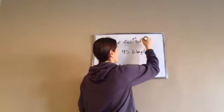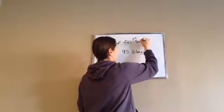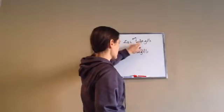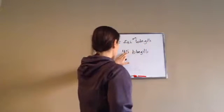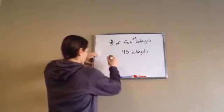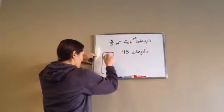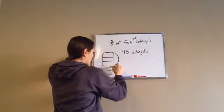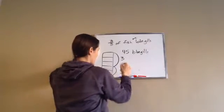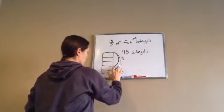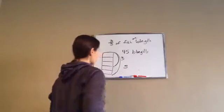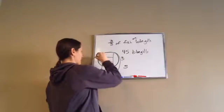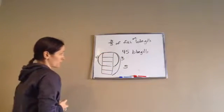So three out of the five of the fish are bluegills, and there's a total of 45. So what I want you to see is I'm going to draw a picture, especially in the beginning, to help you see this. Three out of five, this is five total, three out of the five are bluegills. And that makes up 45. So this three makes up 45 bluegills.